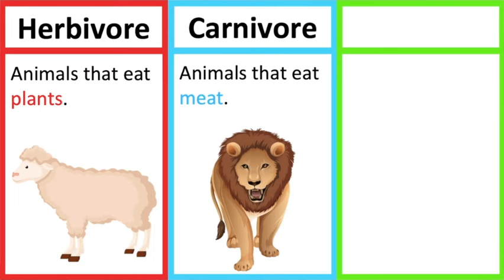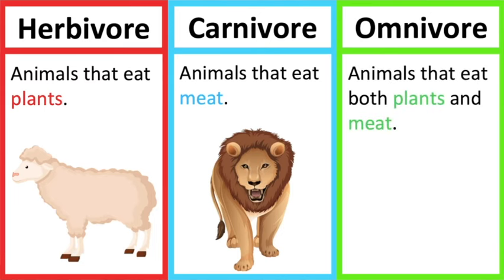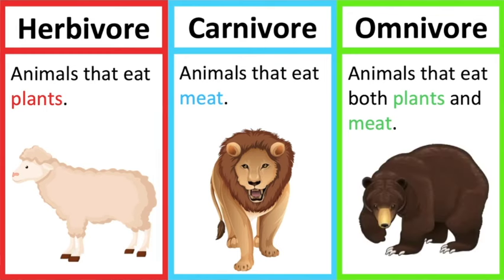Omnivores are animals that eat both plants and meat. For example, bears eat plants and animals; therefore, they are omnivores.